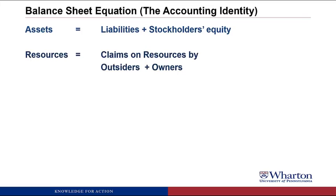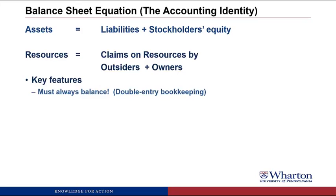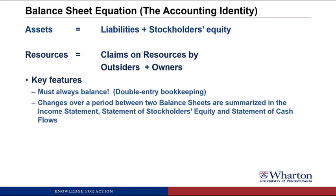The most important feature of the balance sheet equation is that it must always balance, which is why we talk about double entry bookkeeping. If you increase something on one side of the equation, you have to increase or decrease something else to stay in balance — so there must be at least two entries any time you tinker with the balance sheet equation. The changes between two balance sheets are summarized in the income statement, the statement of stockholders' equity, and the statement of cash flows.